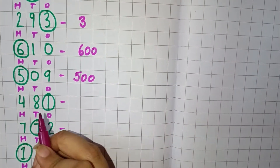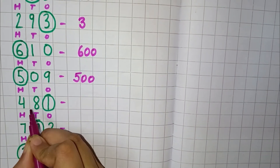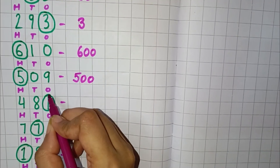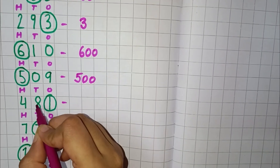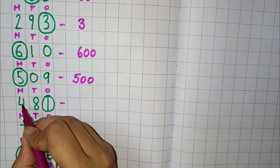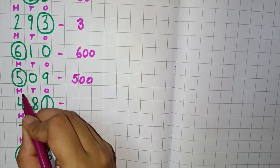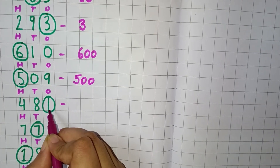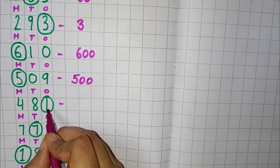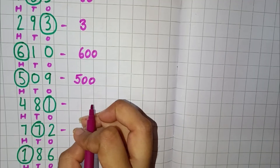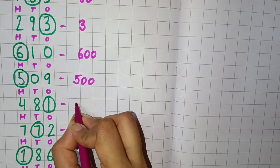Now we have 481. Here 1 is in the 1's place, 8 is in the 10's place, and 4 is in the 100's place. The number which is circled is 1, so we will write here 7.